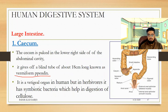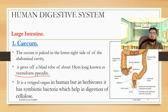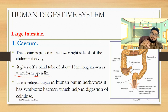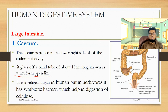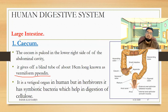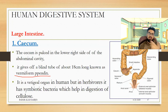The vermiform appendix is a vestigial organ in humans. However, in herbivores, symbiotic bacteria are present in the appendix, and these bacteria produce enzymes that help digest plant material — which is why humans cannot digest it.